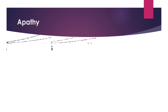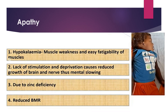Apathy in severe acute malnutrition children occurs due to four reasons. First, hypokalemia causes muscle weakness and easy fatigability. Second, lack of stimulation and deprivation causes reduced brain and nerve growth, leading to mental slowing and apathy. Third, decreased zinc level causes these symptoms. Fourth, reduced basal metabolic rate of up to 30 percent makes the child apathetic.